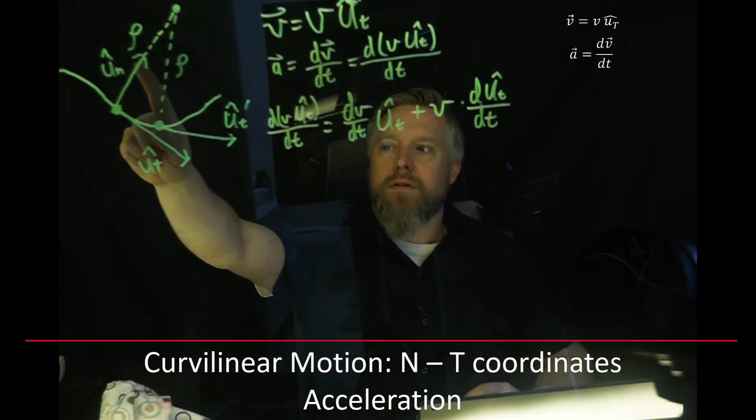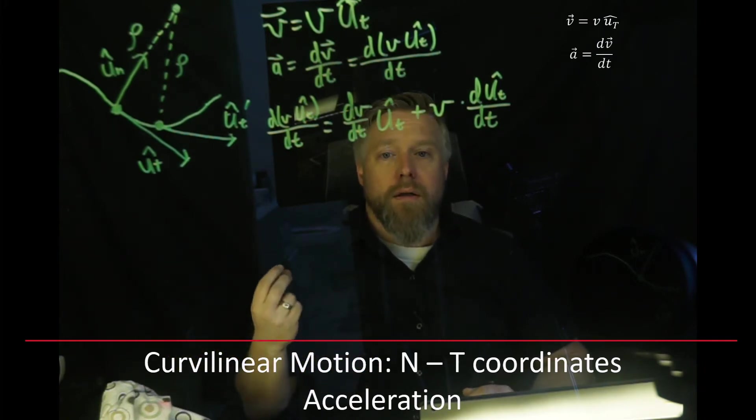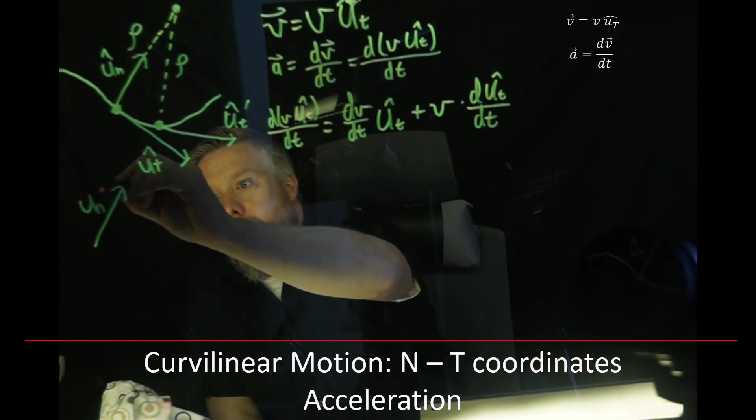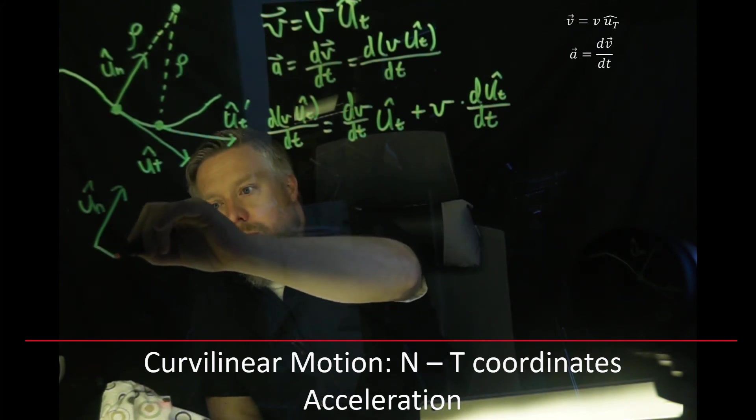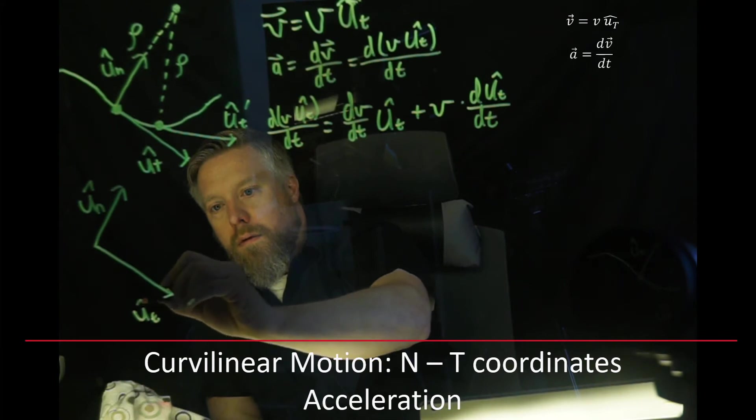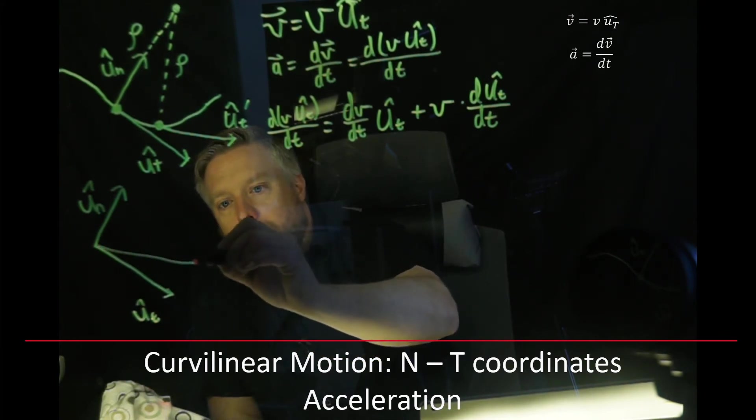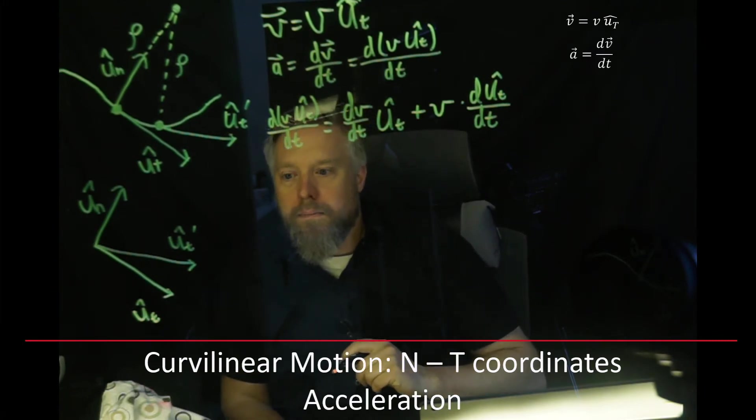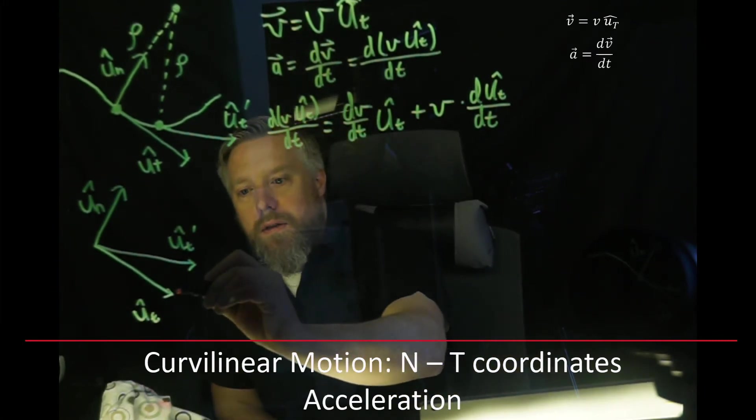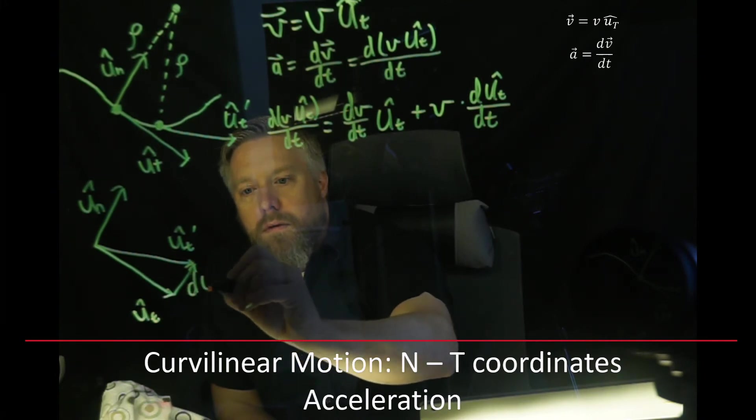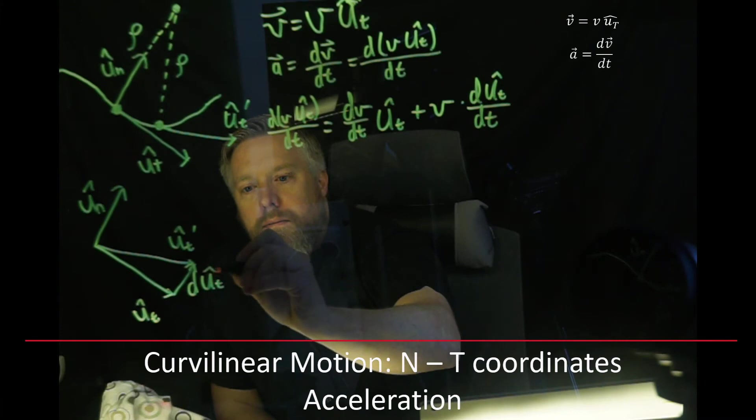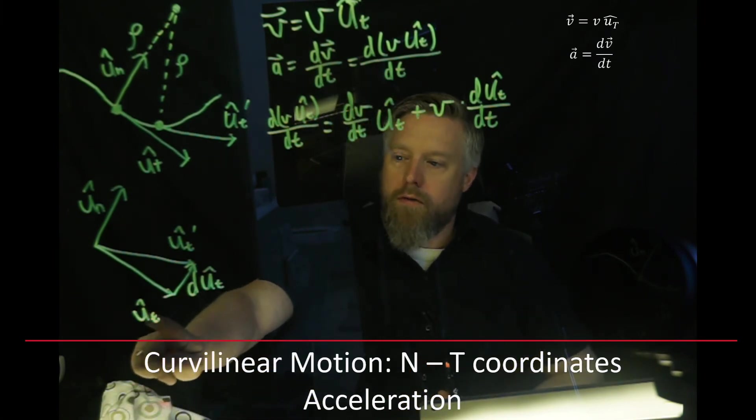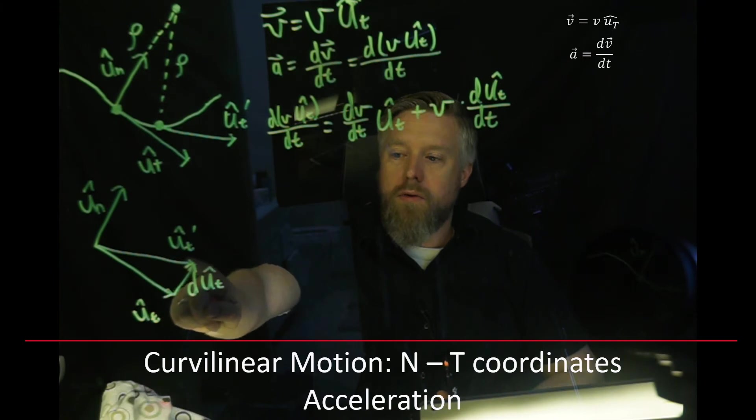And then we also have our new rho, which would look like that. Since this is a really small change, we can say those two rhos are going to be the same or very close. And as the limit as it approaches zero, they're going to be exactly the same. Now all I'm going to do is I'm going to take these three unit vectors, UN, UT, and UT prime. I'm going to put them with their tails in the same location. So here's my UN, here's my UT, perpendicular to it. And then my UT prime is coming out this way.